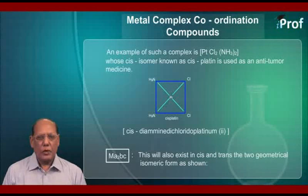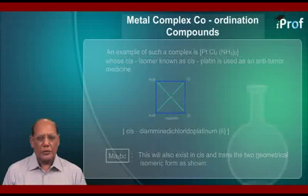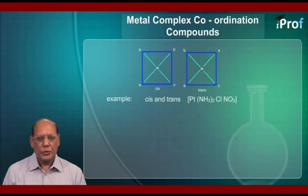Next is MA2BC. This will also exist in cis and trans, the two geometrical isomeric forms, as shown. Examples are cis and trans forms of [Pt(NH3)2(Cl)(NO2)].